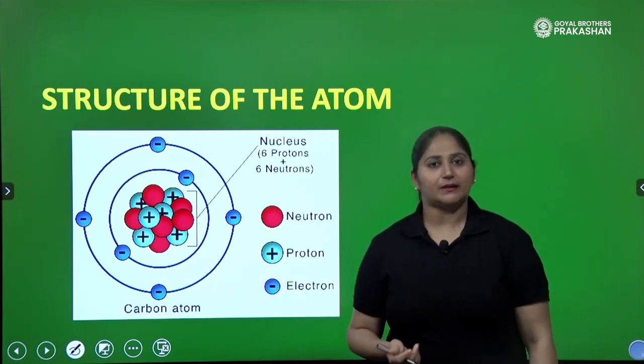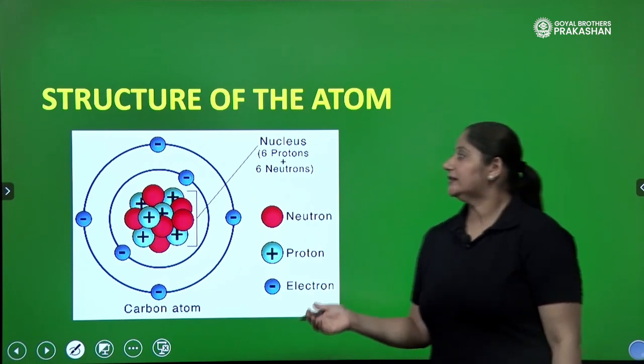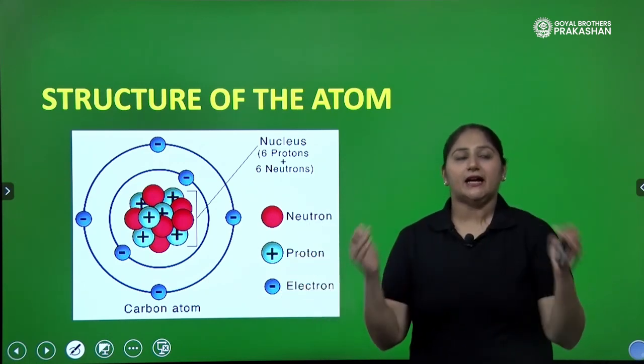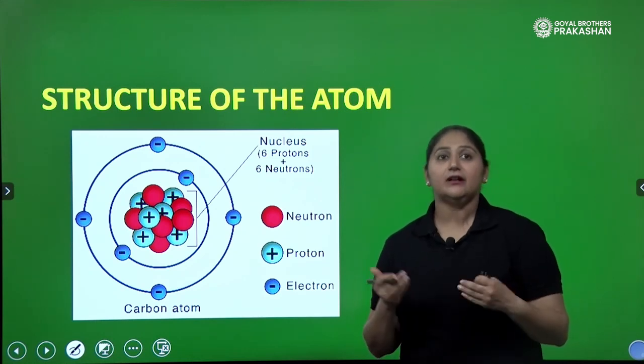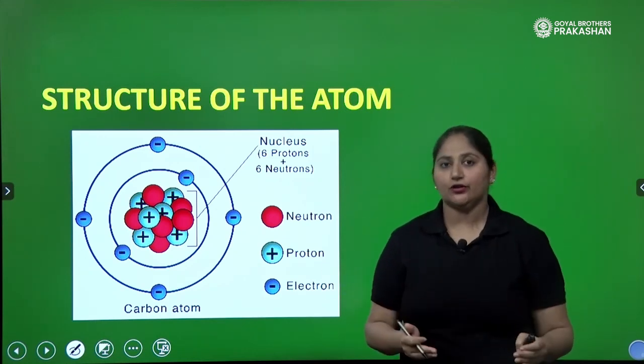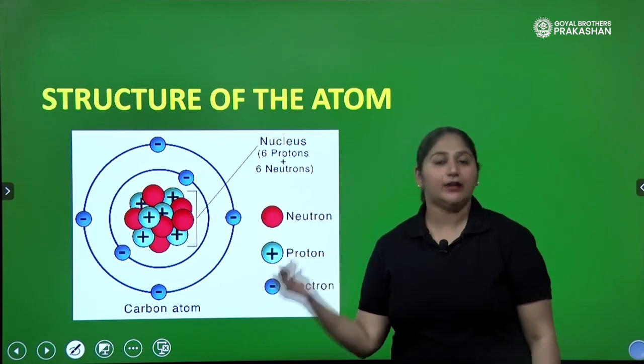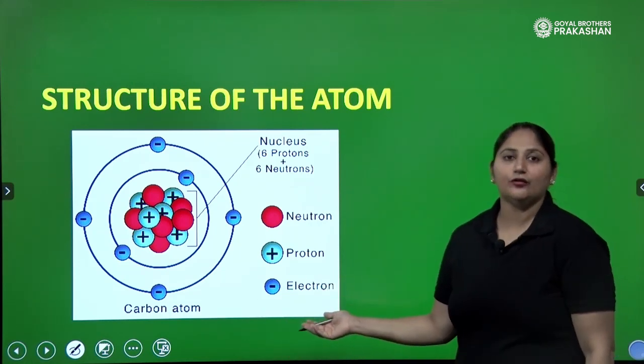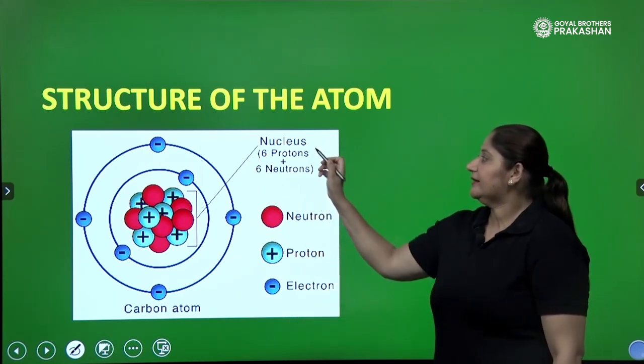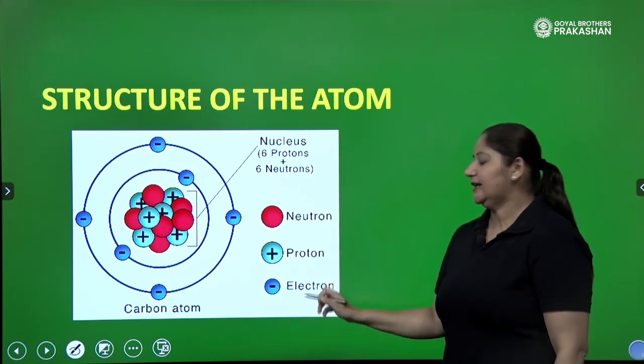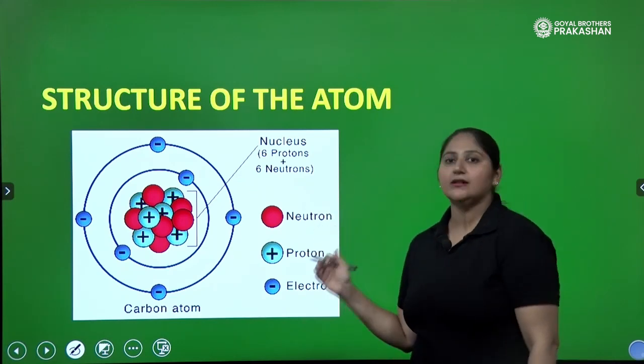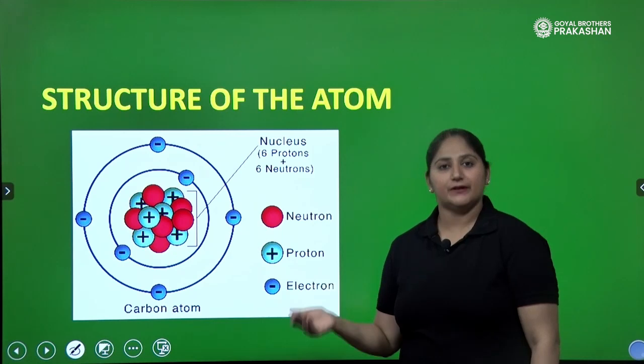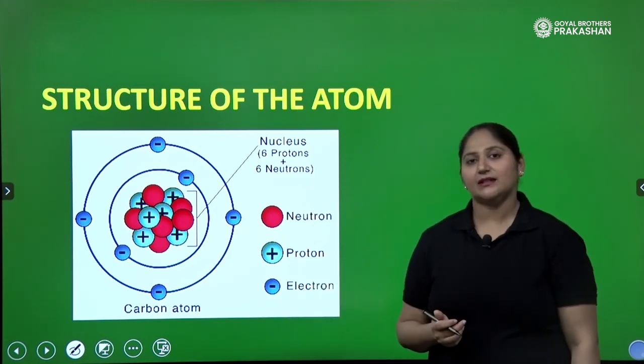What are we going to study in this chapter? We will be dealing with the structure of atom. Where do these electron, proton, neutrons exist or are located in the atom? This is just an example of carbon atom. There are protons, neutrons and electrons. How many electrons, protons and neutrons are there? Definitely we will be discussing these topics further. Let us start with the chapter.